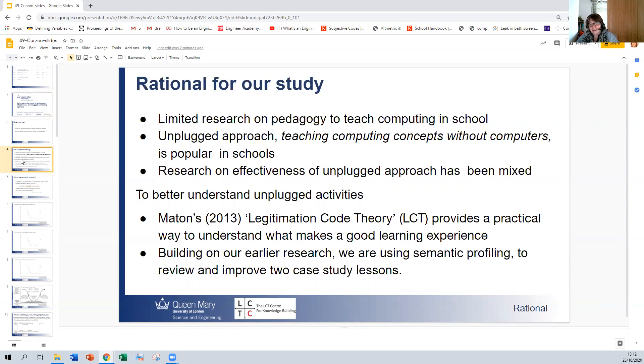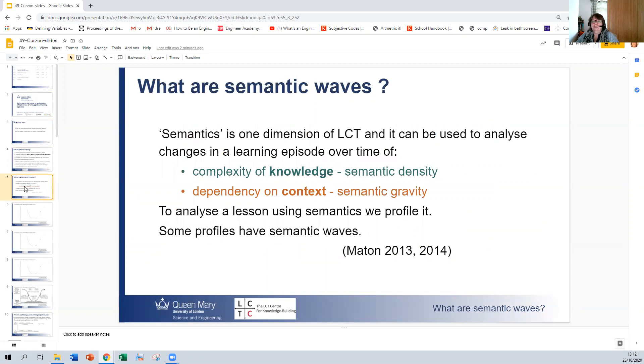Semantic profiling. So semantics is one dimension of LCT, and it can be used to analyze the changes in a learning episode or a learning activity over time. And there are two further things we need to think about when we're doing this: the semantic density and the semantic gravity. Semantic density relates to the complexity of the knowledge and the semantic gravity relates to the dependency on the context.